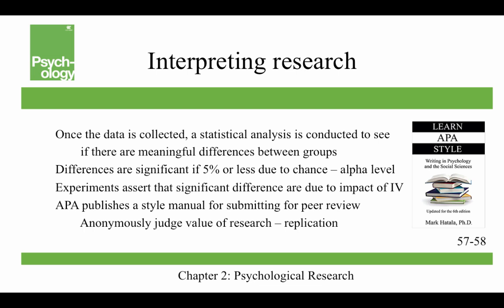Once your data is collected, a statistical analysis is conducted to see if there are meaningful differences between your groups. Differences are significant if there's a five percent or less likelihood that the result is due to chance — that's what's known as the alpha level. Experiments assert that significant differences are due to the impact of the independent variable. The APA publishes a style manual for submitting your paper for peer review — that's the book I wrote on how to teach students to write in APA style. These peers anonymously judge the value of your research, and they're usually professionals and scholars actively involved in research themselves. Peer review ensures that other scientists can replicate the research — repeat it and get the same results — which is crucial to the scientific method.